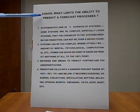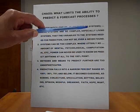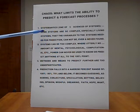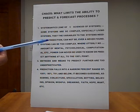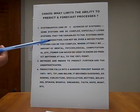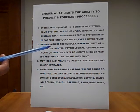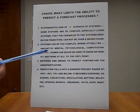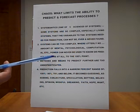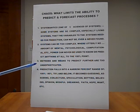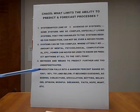Now, we'll go to chaos. What limits the ability to predict and forecast processes? Number one, system addicts, which is one of the five sciences of systems. Some systems are so complex, especially living systems, that the variables to the system needed for prediction cannot be ever and never found. Number two, reason, systems can be too complex where utterly no amount of mental, psychological, computational, etc. power can never be used to know or predict anything at all to the 100% point.